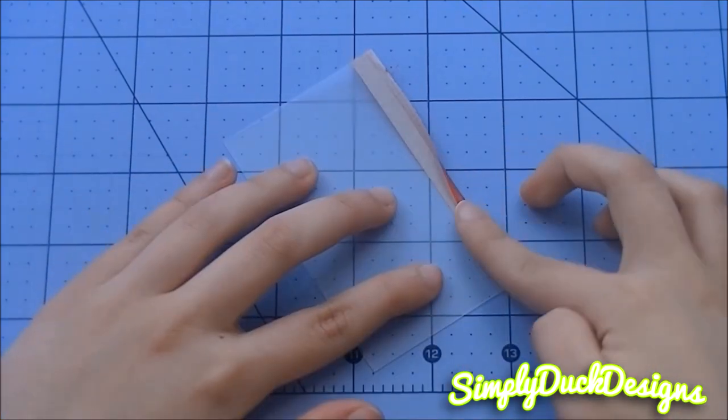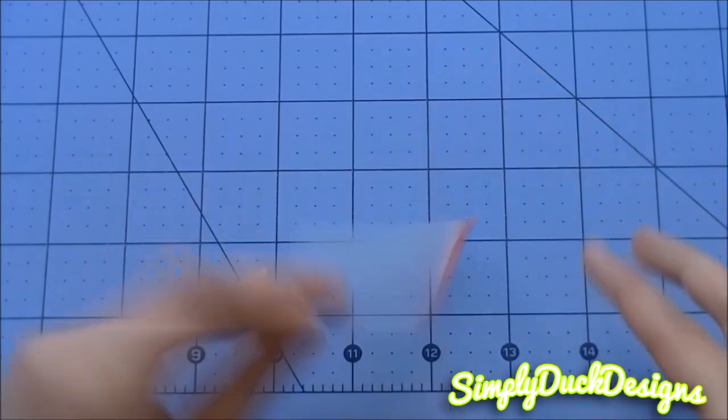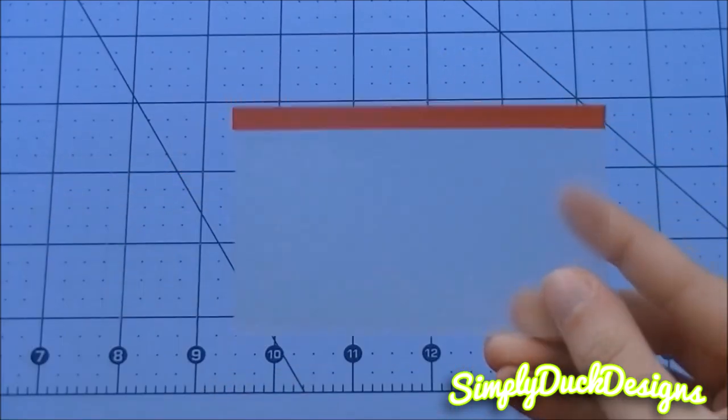Now just fold that over. Once again, you can use your clear tape to tape the trim on this and the card pockets down. And now we're going to work on our short pocket.